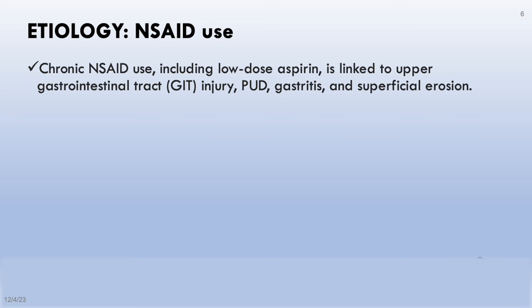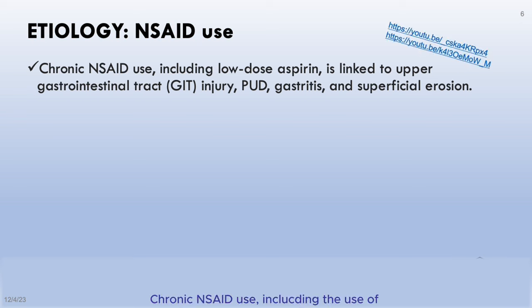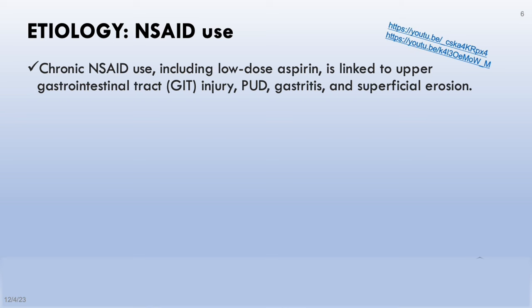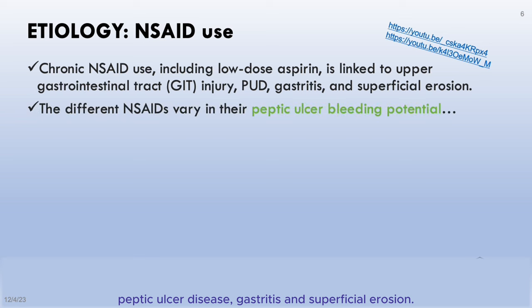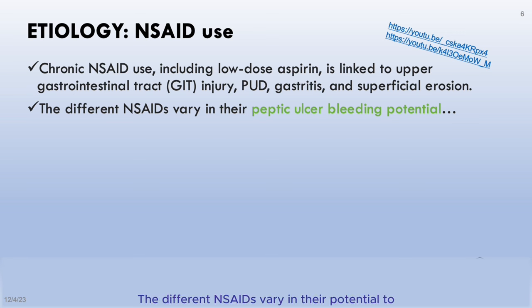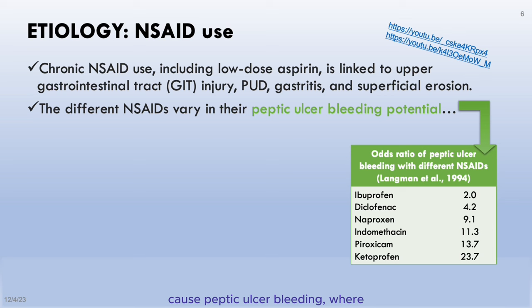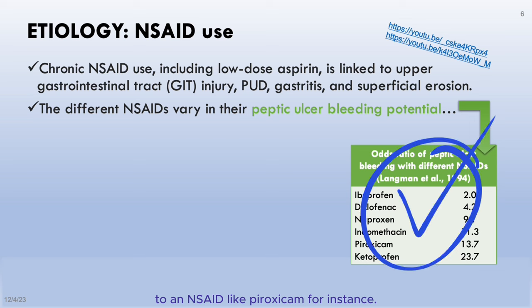Chronic NSAID use, including low-dose aspirin, is linked to upper GIT injury, peptic ulcer disease, gastritis, and superficial erosion. The different NSAIDs vary in their potential to cause peptic ulcer bleeding — ibuprofen is much safer to use when compared to an NSAID like piroxicam, for instance.